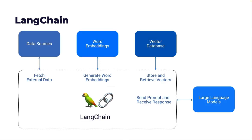LangChain essentially deals with four key building blocks of an LLM application. The first one is the data source, which could be anything from structured to unstructured — PDFs, CSVs, SQL databases, or even searching the web. Word embeddings is the mechanism of converting the data into vectors that preserve the contextual meaning of the content. To store and retrieve these vectors, it also interacts with a variety of vector databases including Chroma.